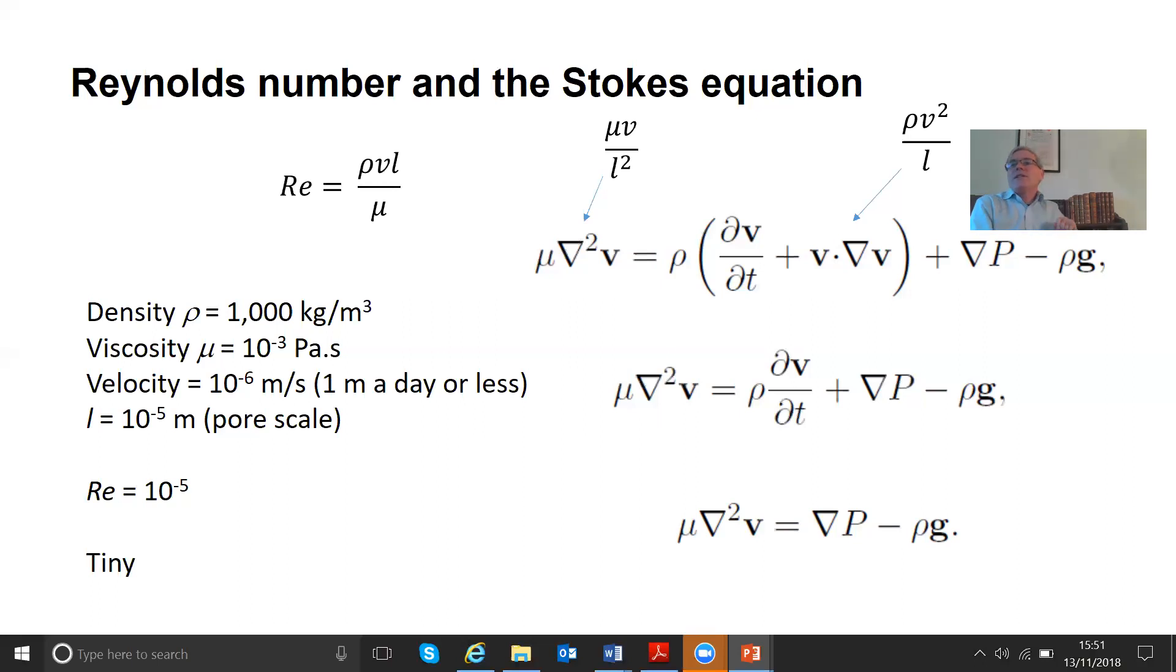What's the length? Now, the typical length is not the length of the size of the system. It's not the length of my piece of rock. It's not the length of my aquifer. The physical length for porous media flow is always, always, always the pore size. And as we've shown before, typical pore sizes are tens of microns maybe in most of the samples we're going to be looking at. So say 10 to the minus 5 meters. So put those numbers in, your Reynolds number is 10 to the minus 5.